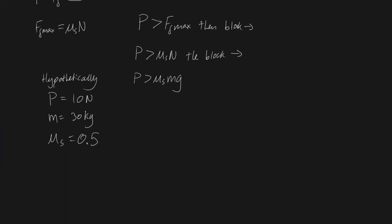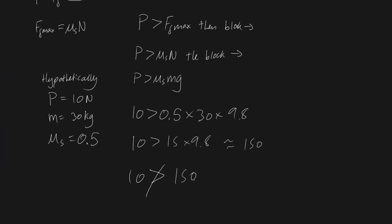So let's see if this is the case. Then 10 will be greater than 0.5 times 30 times 9.8, right? Is this the case? Well, this is 10. What about this? Well, it's going to be 15 times 9.8, which is approximately 150. 10 is definitely not greater than 150, right? So basically, the block will not move to the right in this case. But you can just play around with values to figure out what would be the case for the block to move to the right.